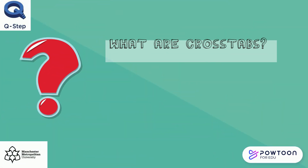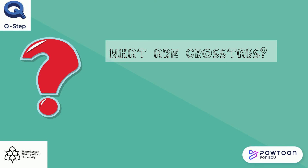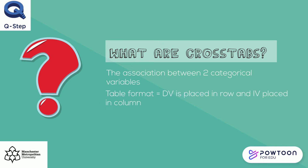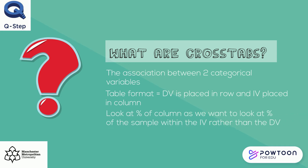So let's find out what crosstabs are. These allow for the association between two categorical variables to be found. They are often found in table formats where the dependent variable is placed in the row and the independent variable is placed in the column. It's also important to look at the percentage of column rather than the percentage of row, as we want to look at the percentage of the sample within the independent variable rather than the dependent variable.